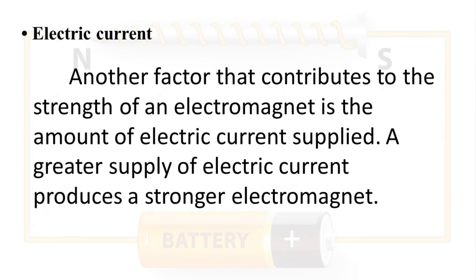Third factor: Electric Current. Another factor that contributes to the strength of an electromagnet is the amount of electric current supplied. A greater supply of electric current produces a stronger electromagnet.